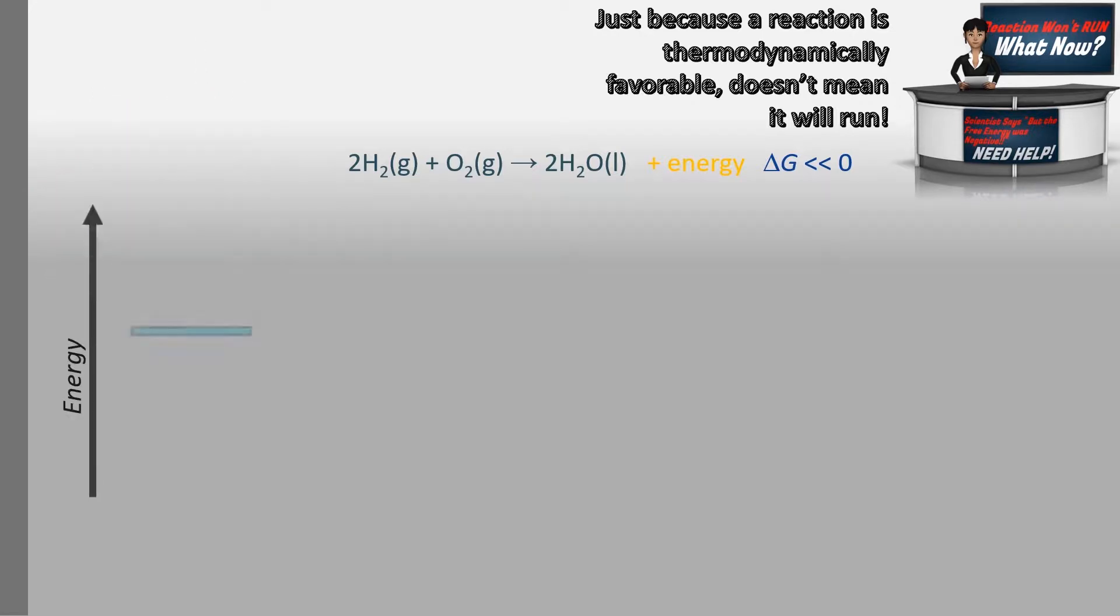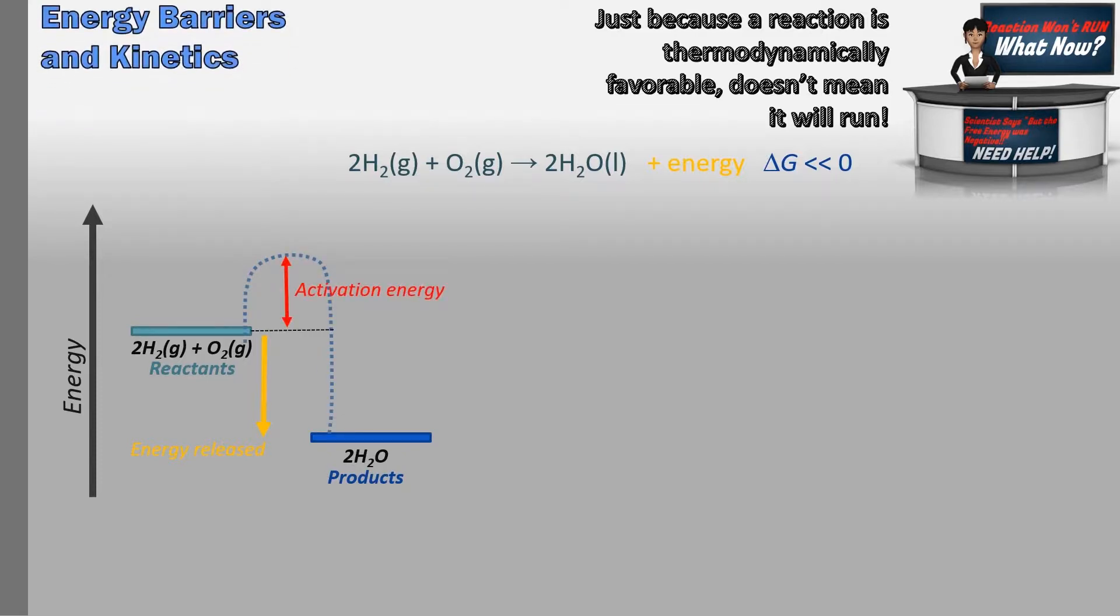So what's going on? Well, reactions have to climb what we call an energy barrier or activation energy between the reactants and products. It's this energy barrier that moderates the speed or rate of the reaction, and consequently, the back reaction as well.